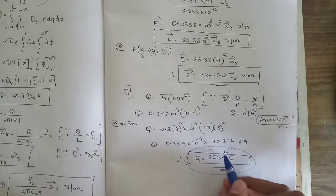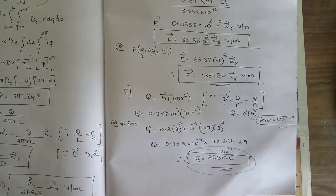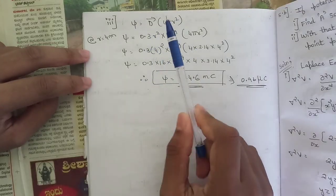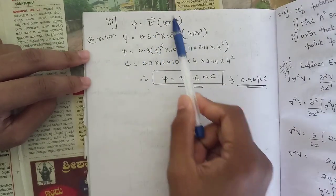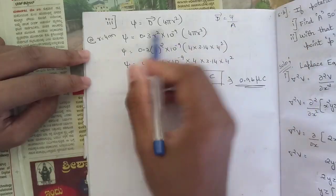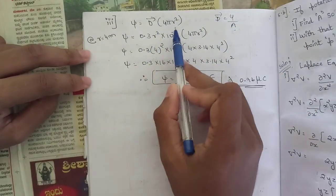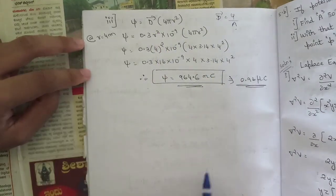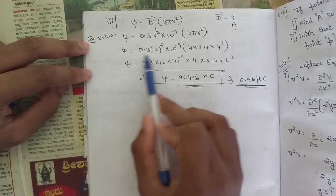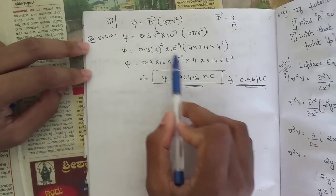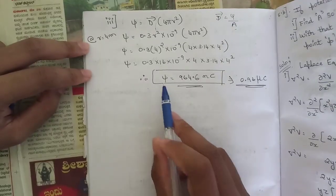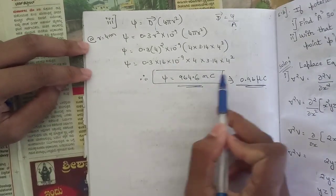For the third sub-question, total electric flux leaving the sphere at r = 4 meter: again we apply ψ = D × A. Since D = ψ / A, cross-multiplying gives ψ = D × A, where the area of sphere is 4πr². Substituting D = 0.3r² × 10⁻⁹ and r = 4: ψ = 0.3 × 4² × 10⁻⁹ × 4 × 3.14 × 4². Simplifying gives electric flux ψ = 964.6 nano coulomb.